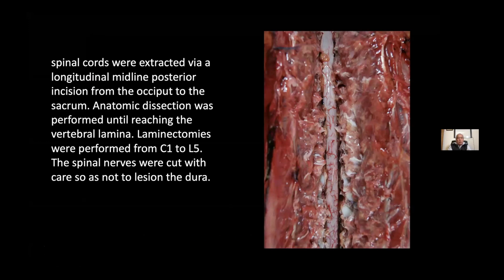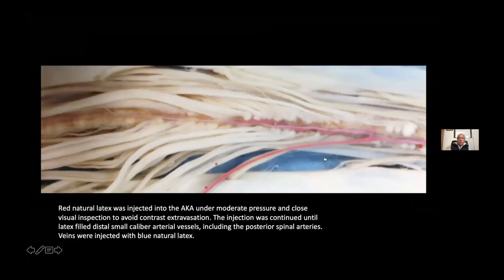Spinal cords were extracted via a longitudinal midline posterior incision from the occiput to the sacrum. Anatomic dissection was performed until reaching the vertebral lamina. Laminectomies were performed from C1 to L5. The spinal nerves were cut with care so as not to injure the dura. This is a picture of the posterior spinal cord after the laminectomy from C1 to L5, and then after we resect this spinal cord.